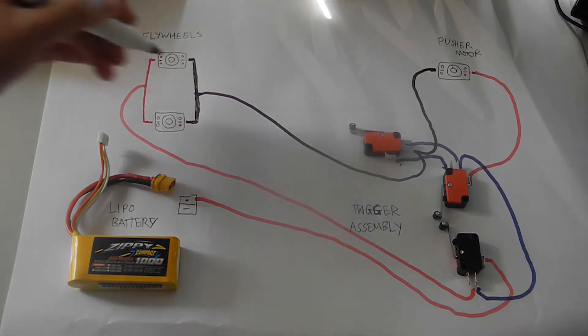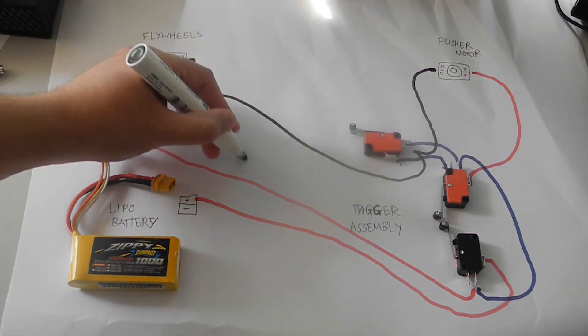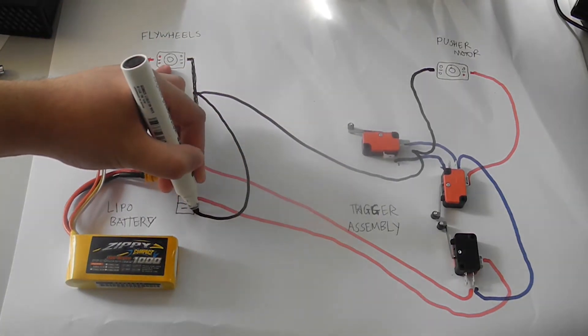Finally, to complete the circuit, the negative of the flywheels will go back to the negative on the XT60.